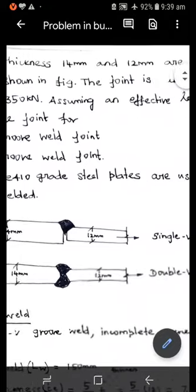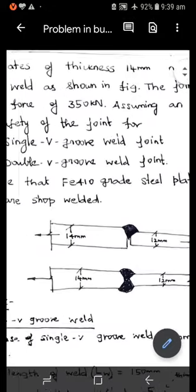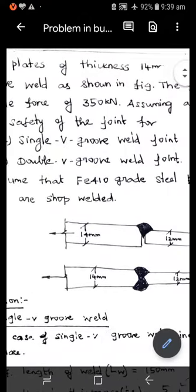Two plates of thickness 14 mm and 12 mm are to be joined by a groove weld as shown in figure.